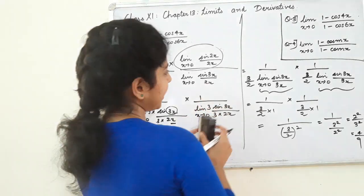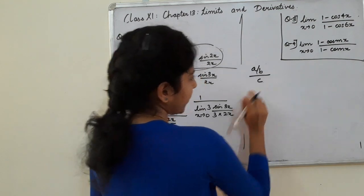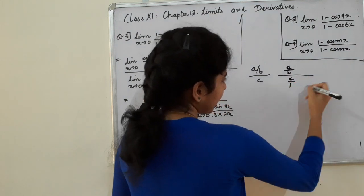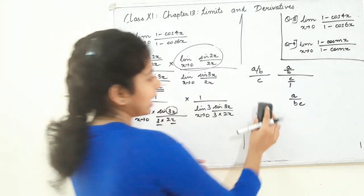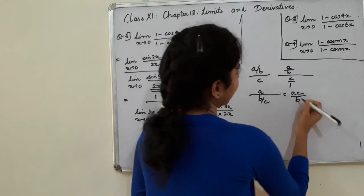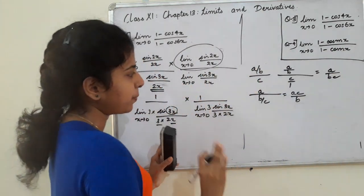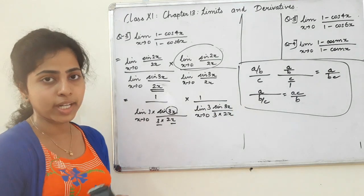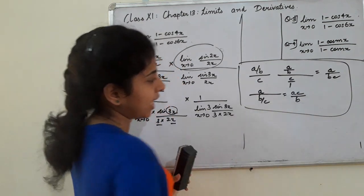Now, a fraction divided by a number: a upon b divided by c upon 1 gives a by bc. And a number divided by a fraction: a divided by c upon d gives a times d upon c, i.e., a upon b divided by c upon d equals a·d upon b·c.